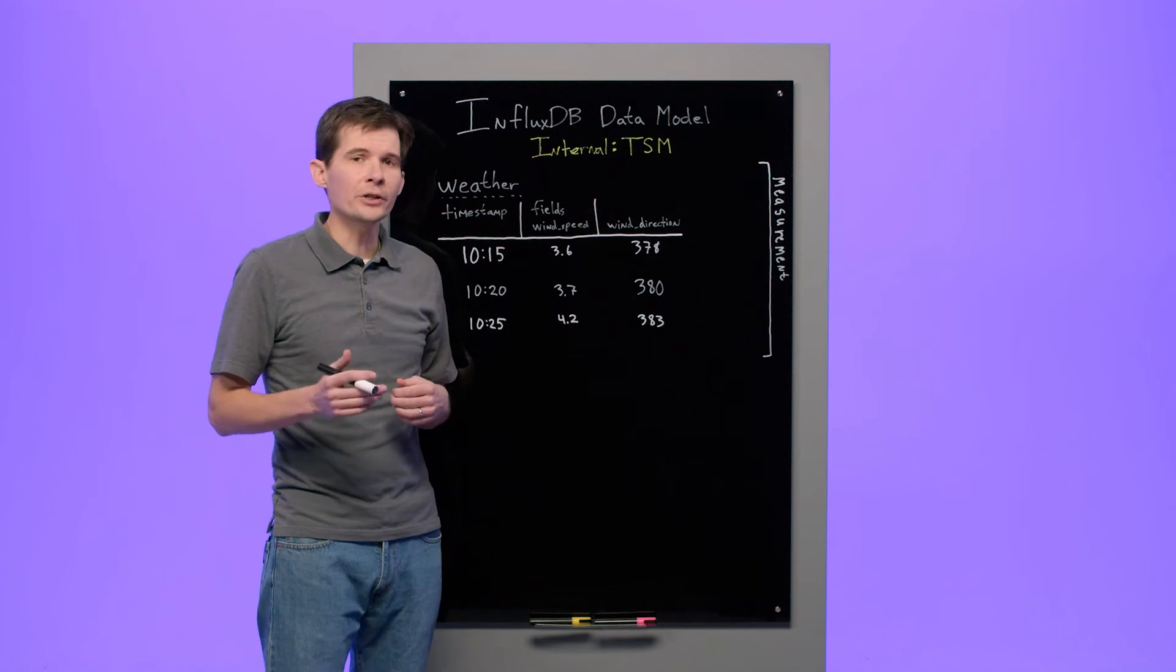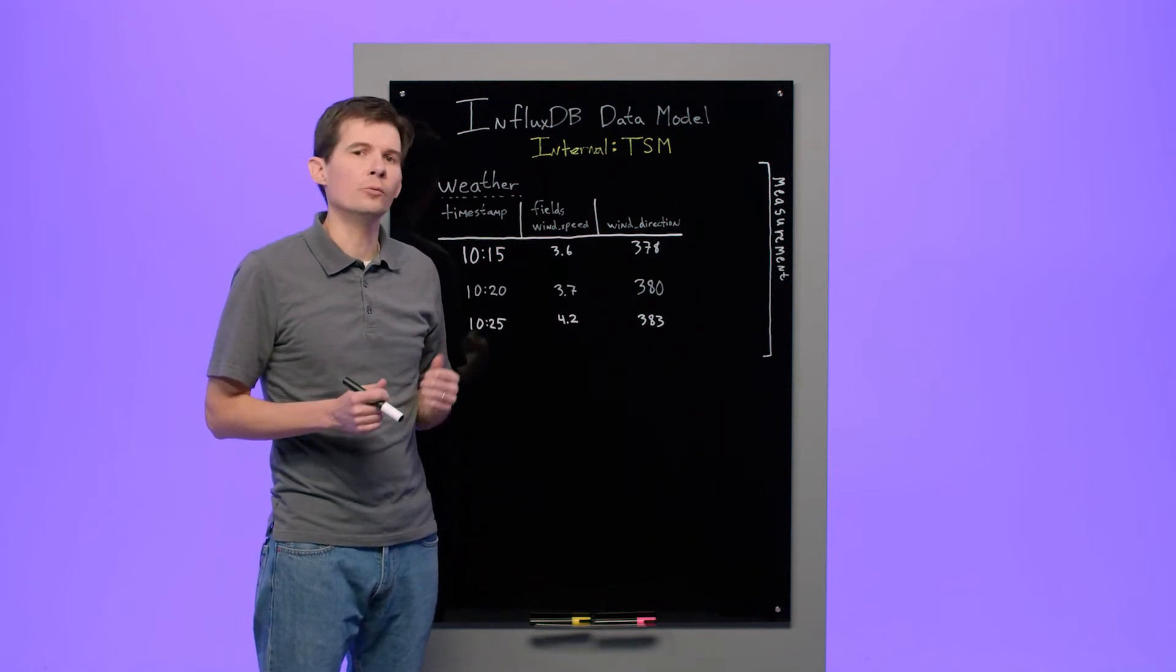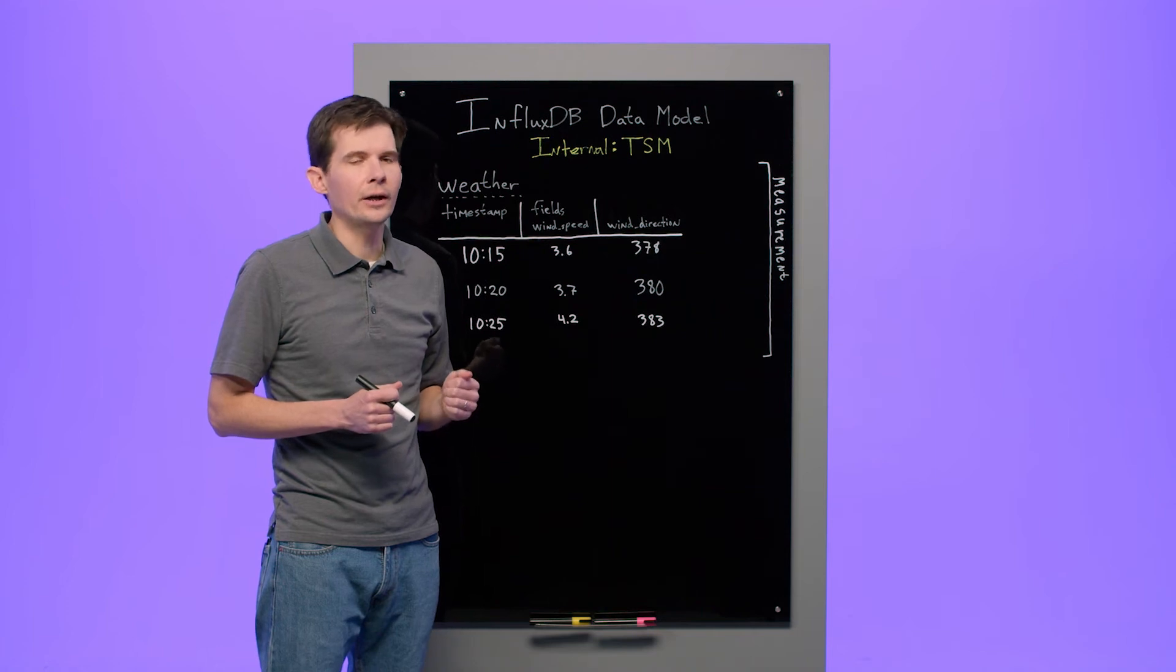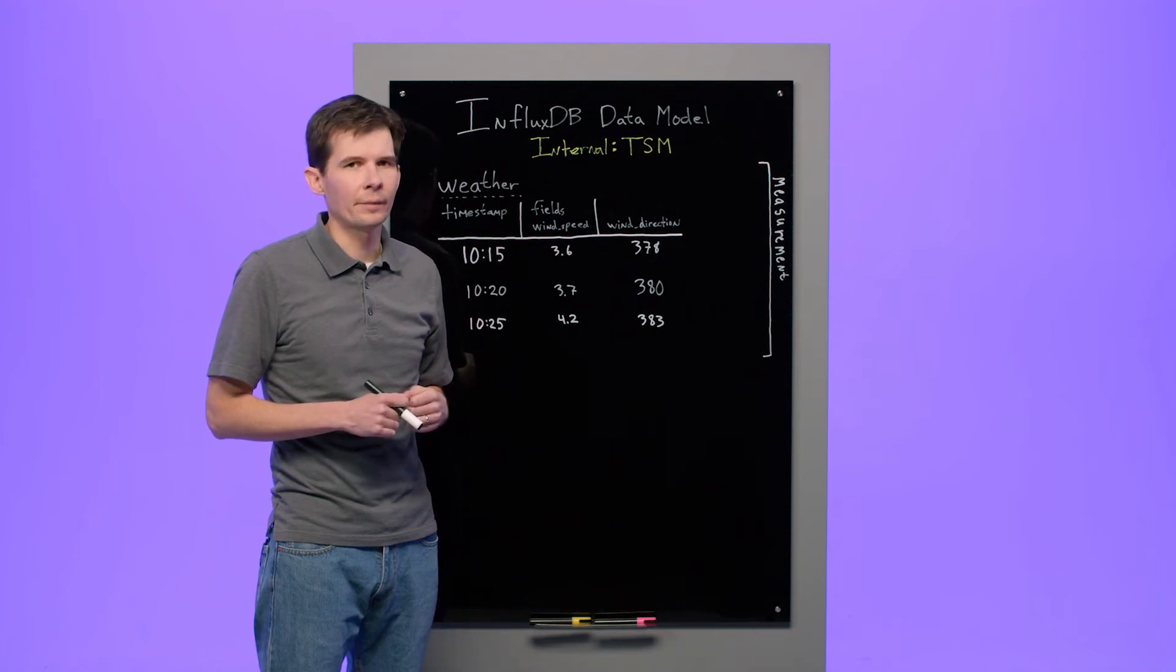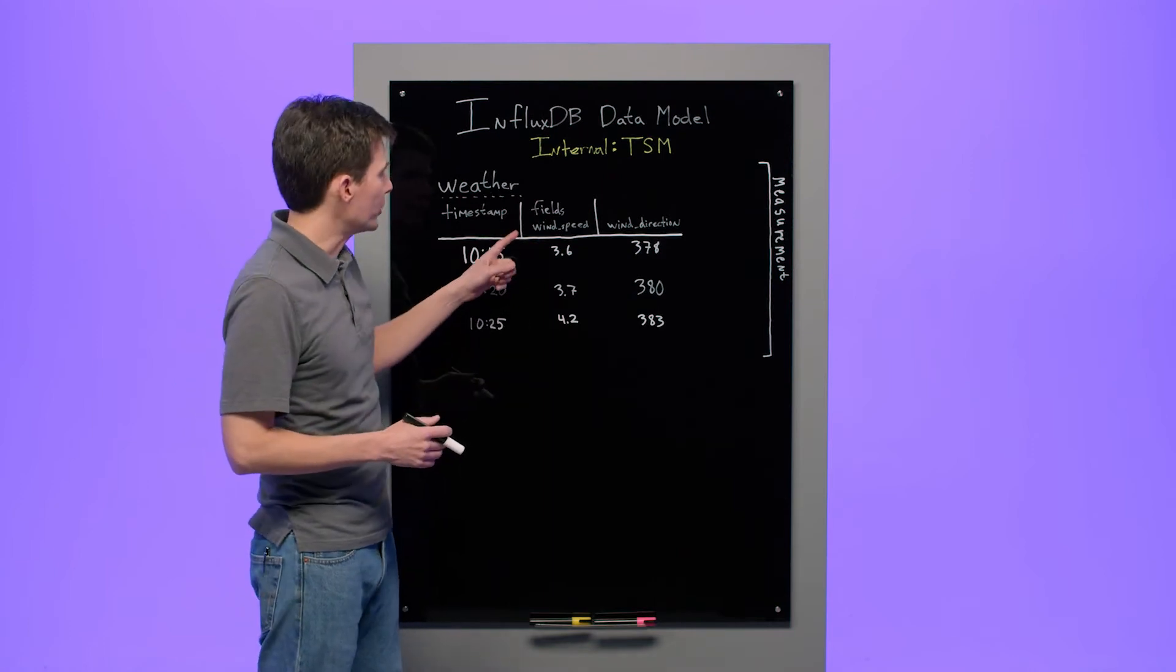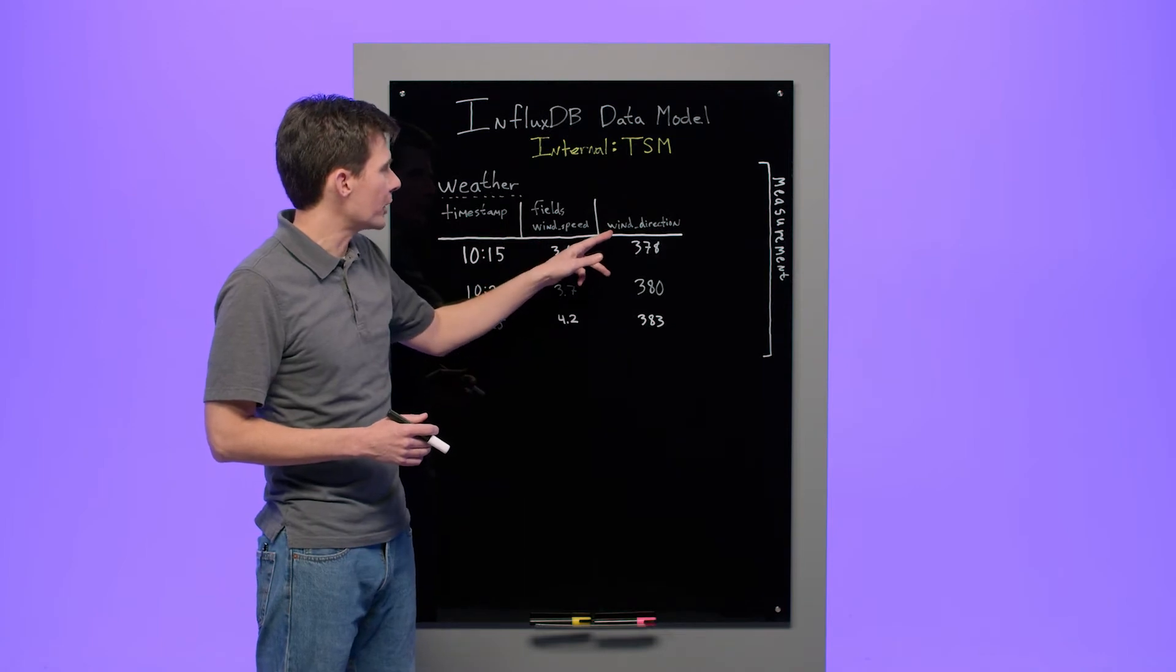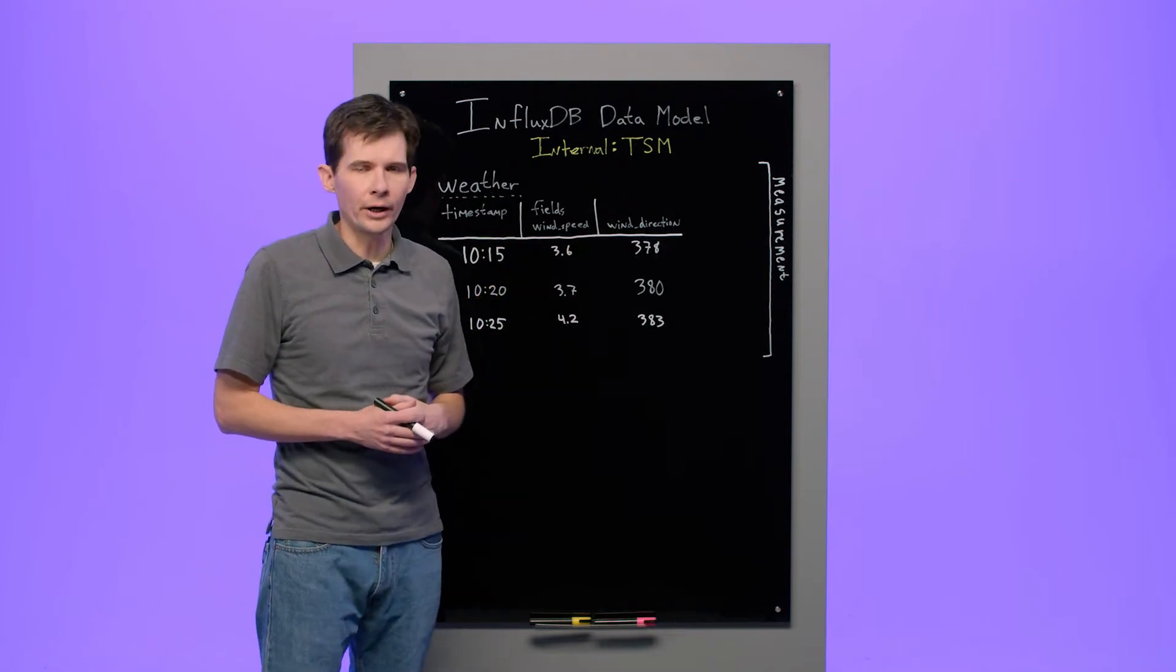In this example, our weather station collects wind speed in knots and wind direction in degrees every five minutes. We store the data in a measurement called weather and we store the wind speed in the field called wind speed and wind direction in the field called wind direction.